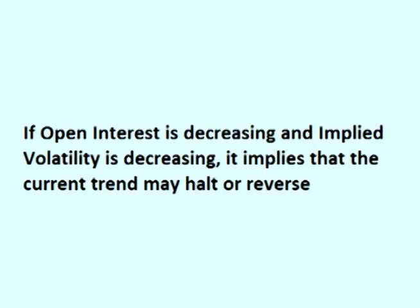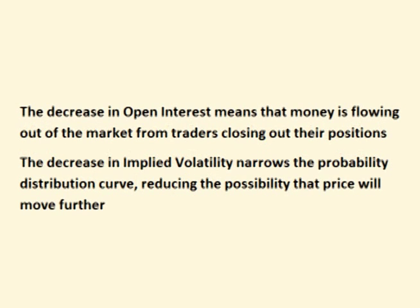If open interest is decreasing and implied volatility is decreasing, it implies that the current trend may halt or reverse. The decrease in open interest means that the number of outstanding contracts is going down from traders closing out their positions, and the decrease in implied volatility means that the market is stating that the chance of price moving further is decreasing.